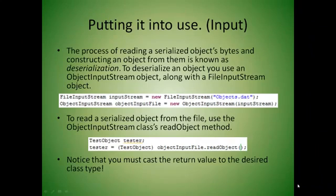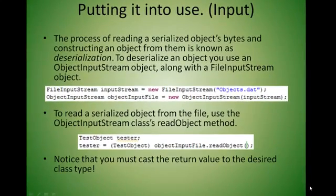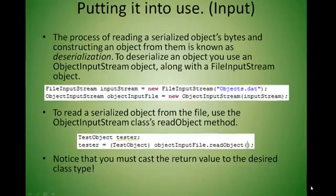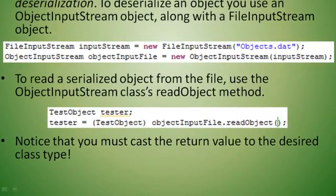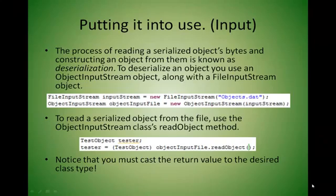The process of reading a serialized object's bytes and constructing an object from them is known as deserialization. To deserialize an object, you use an ObjectInputStream object along with a FileInputStream object. To then read a serialized object from this file, you must use the ObjectInputStream's readObject method. Notice that you must cast the return value to the desired class type.